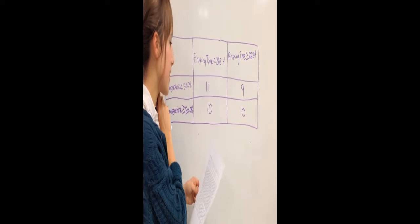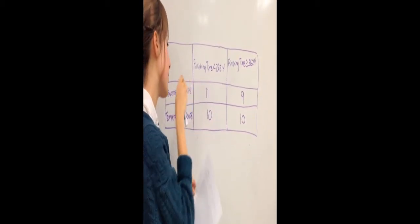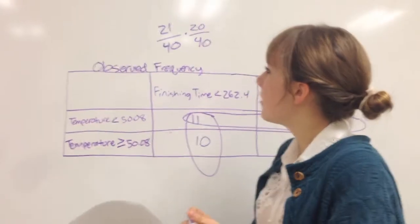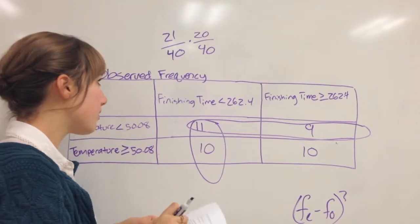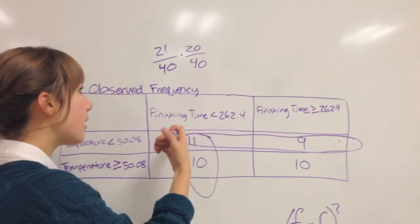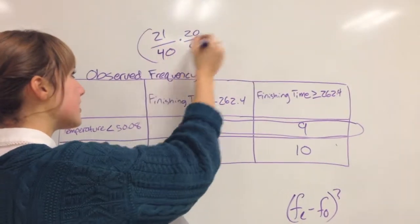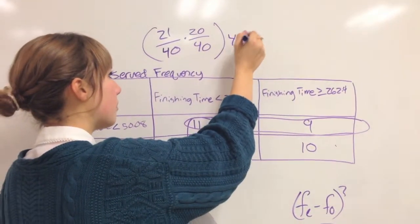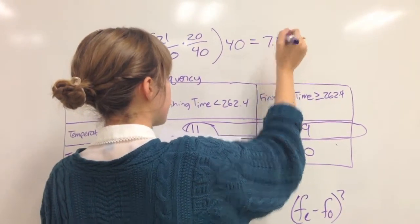With a temperature less than 50.08, right now I'm multiplying to find the probability of this occurring. So I multiply this by this, and then you multiply that entire thing by the total number of values that you have, and that gives you your expected value, which is 7.16.